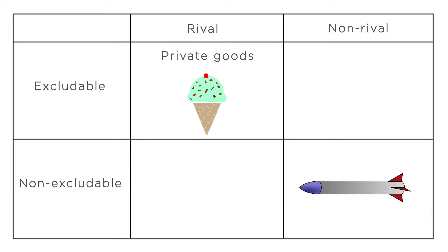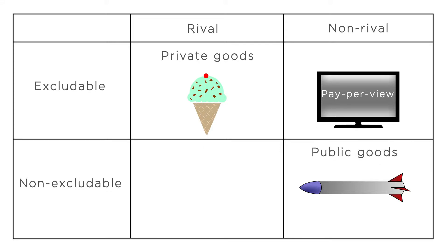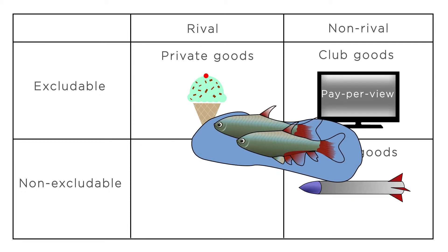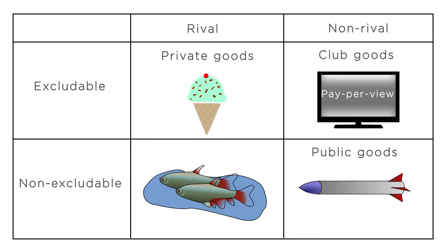Goods like missiles, street lighting, or fireworks, which are non-rival and non-excludable, are called public goods. Now, many goods might seem to be partway between private and public goods. For example, a pay-per-view movie on TV is non-rival, since ordering and watching the movie doesn't prevent you from ordering and watching the same movie at the same time — but it is excludable, since neither of us can watch the movie unless we pay for it. Goods like pay-per-view movies, computer software, or private parks are non-rival and excludable, and are referred to as club goods. A good like wild fish is non-excludable, since it's not possible to keep people from catching fish, but it is rival, since the same fish cannot be caught and eaten more than once. Goods like wild fish, timber, or a public basketball court that are non-excludable but rival are referred to as common goods.